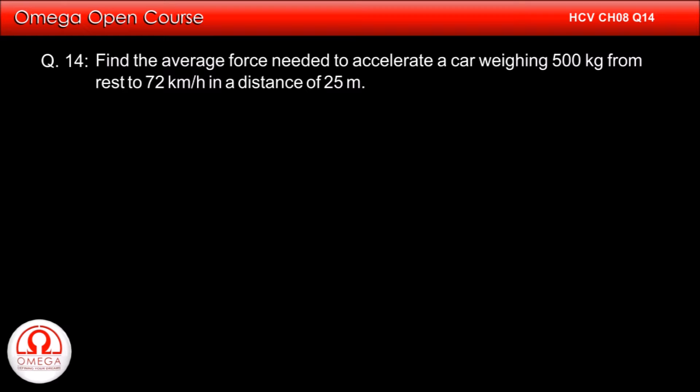There are many approaches to solve this question. Let us solve it using exclusively the concepts of work and energy. The mass of the car is 500 kg. The speed gained by the car is 72 km per hour, i.e. 20 meters per second.